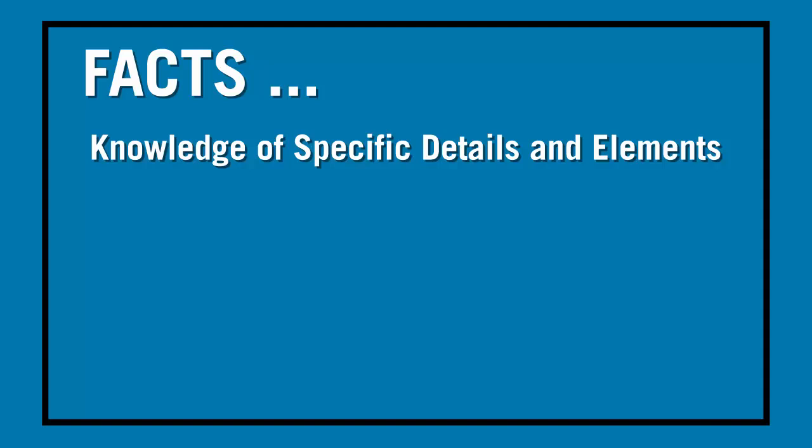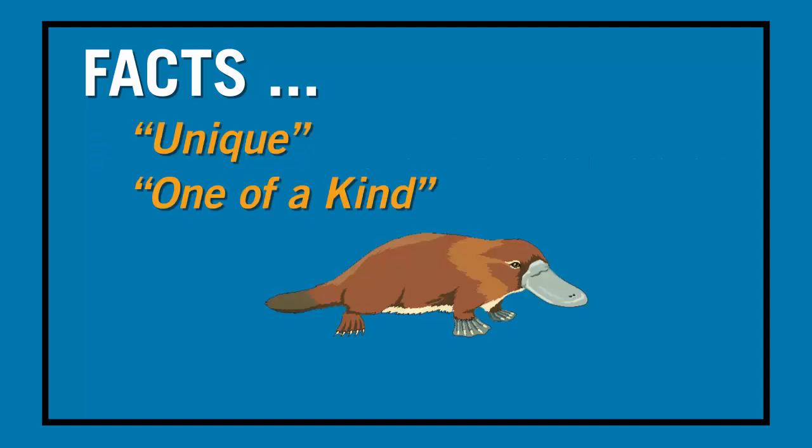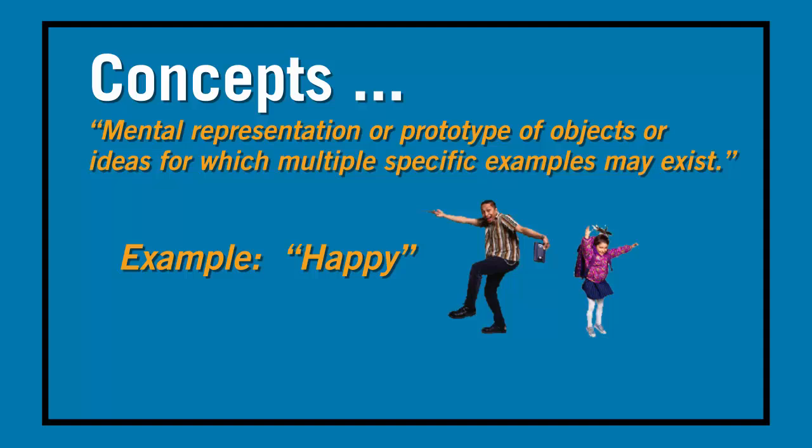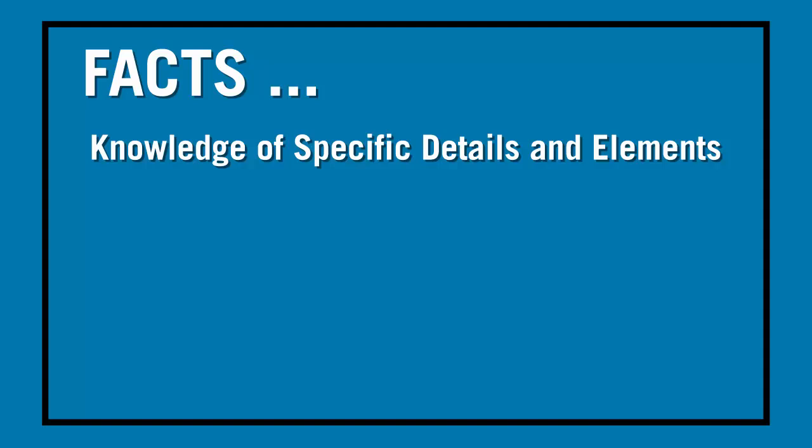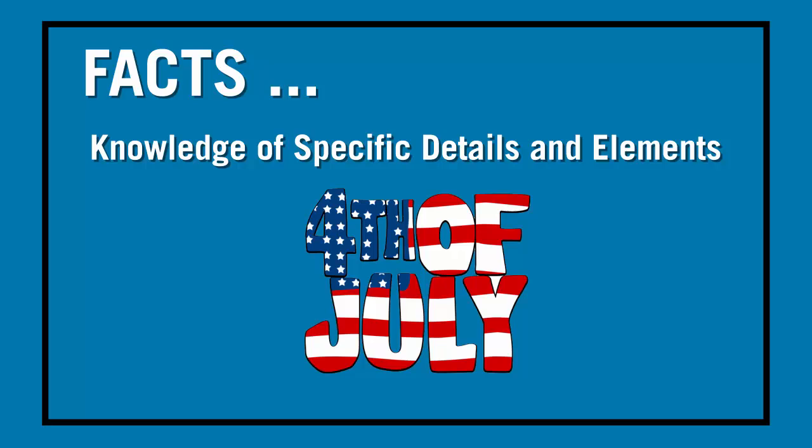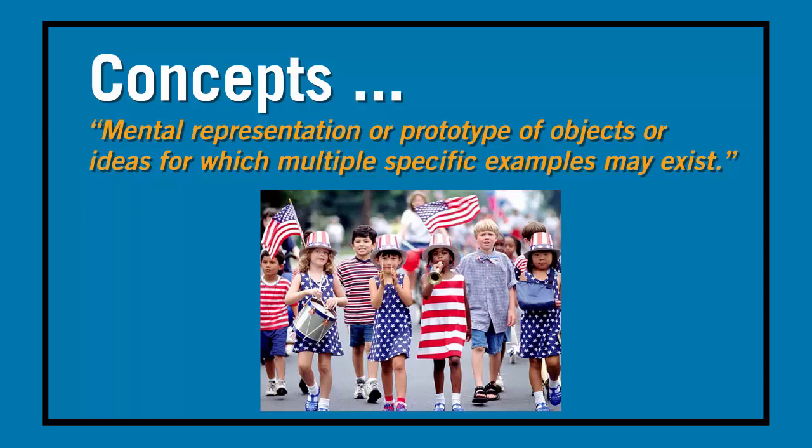Instructional design researcher and specialist Ruth Colvin Clark notes that facts are unique, one-of-a-kind, different types of information and concepts are a mental representation or prototype of objects or ideas for which multiple specific examples may exist. For example, Colvin Clark might suggest that an example of a fact is, the United States government has declared the 4th of July each year as a national holiday. Whereas a concept related to the 4th of July may be, people recognize and celebrate our nation's freedom on the 4th of July each year.